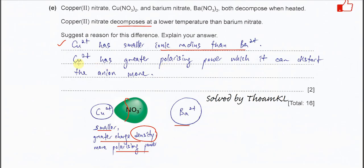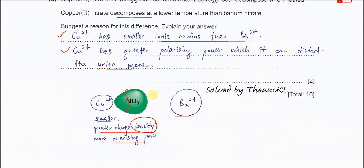Copper(II) ion has smaller ionic radius than barium, therefore copper(II) ion has greater polarizing power which can distort the nitrate ion more than barium. It's easier to break the N-O bonds. That's all, thank you.